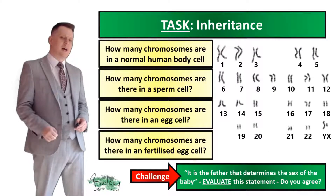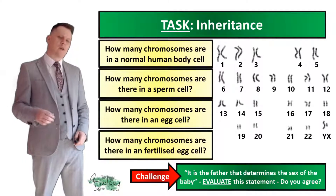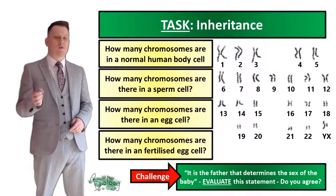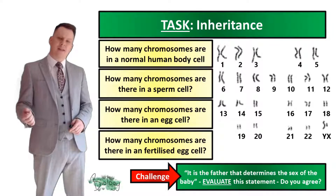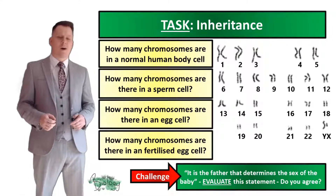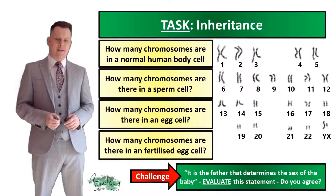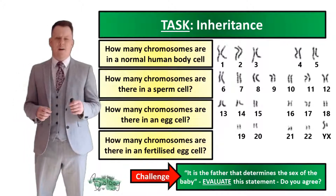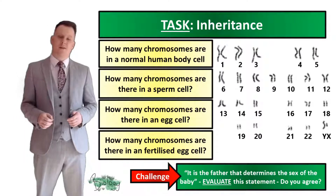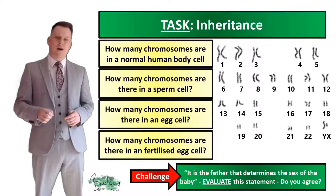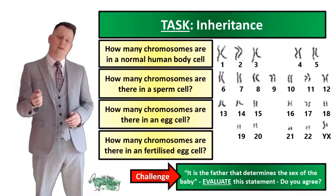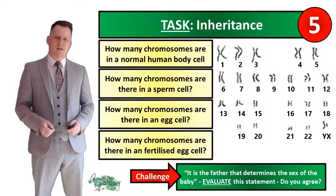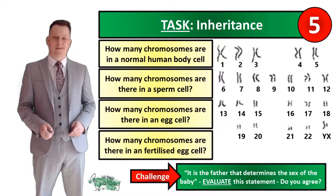For the next task, answer the following four questions: How many chromosomes are in a normal human body cell? How many are in a sperm cell? In an egg cell? And how many are in a fertilized egg cell? As a challenge, evaluate this statement: 'It is the father that determines the sex of the baby.' Pause the video if you need more time.